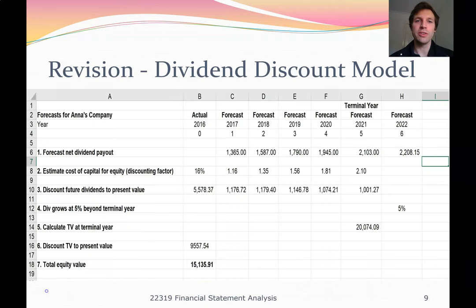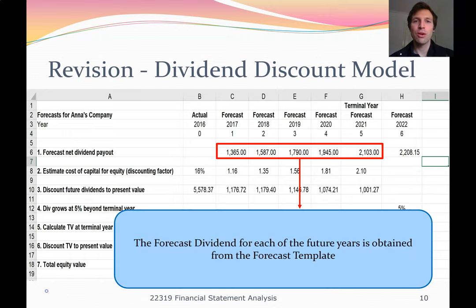Previously we just looked at the formula for the dividend discount model. Now I'll briefly show you how it's applied in Excel — how the formula is broken down into different rows in a table. This is the valuation question from last week on Anna's company, applying the dividend discount model. We start by forecasting the dividends, then calculate discount factors, then the present value of the dividends, then deal with the terminal value and its present value, and finally add it all up to get the value of equity. From the forecasting template, I get the future dividend forecasts — in this case, from year one out to year five.